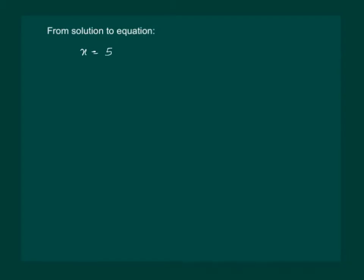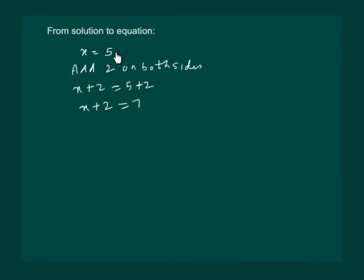We can take many paths. Either we can say add 2 on both sides, then the equation will become x plus 2 equal to 5 plus 2, and x plus 2 equal to 7 is the required equation whose solution was x equal to 5.